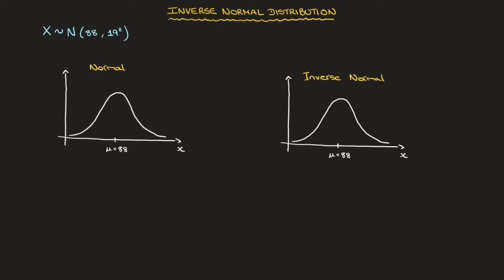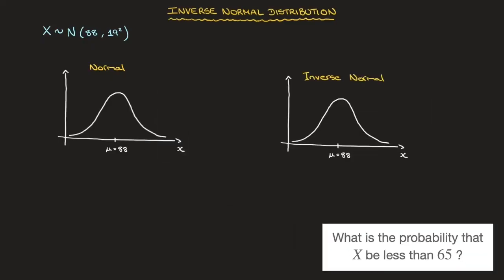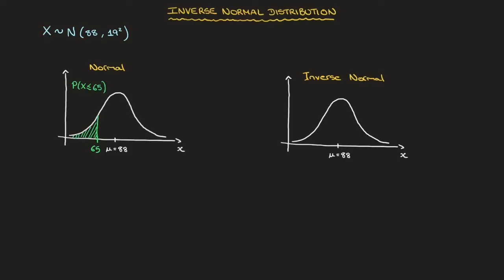With the normal distribution, we were calculating probabilities, and each of those probabilities corresponded to an area under the bell curve. A typical example could be: we're given a value of X, say X equals 65, and we need to find the probability that X be less than or equal to 65. On the bell curve, that corresponds to the area I'm highlighting right now, so that area is P(X ≤ 65).